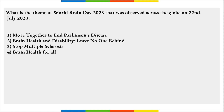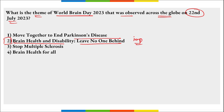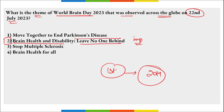What is the theme of World Brain Day observed on 22nd July 2023? The theme is 'Brain Health and Disability: Leave No One Behind.' World Brain Day was first observed on 22nd July 2014.